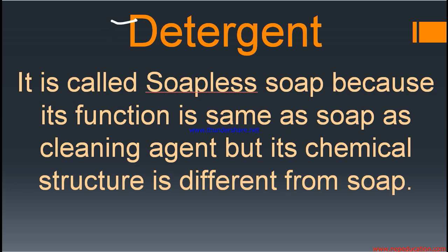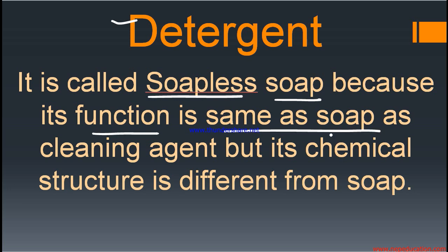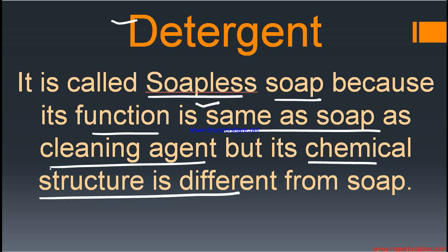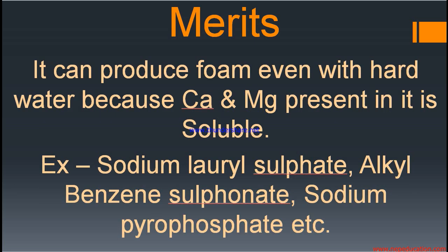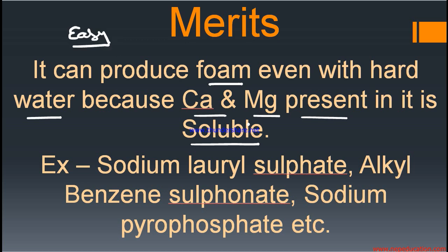Another cleaning agent is detergent. Detergent is given the name soapless soap because its function is the same as soap — it is used as a cleaning agent — but its chemical structure is different. That is why it is called soapless soap. The merits of detergent: it can produce foam even with hard water, and it is easy to handle and clean cloth compared to soap.